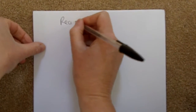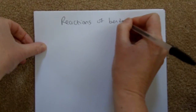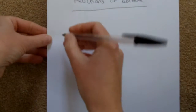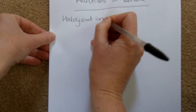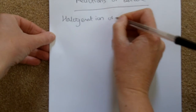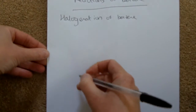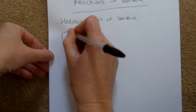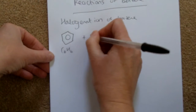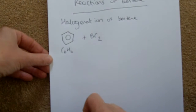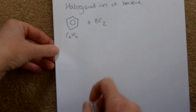Okay, so reactions of benzene. We have two reactions to cover. The first one is halogenation — the halogenation of benzene. We're going to be looking at benzene C₆H₆ plus bromine.